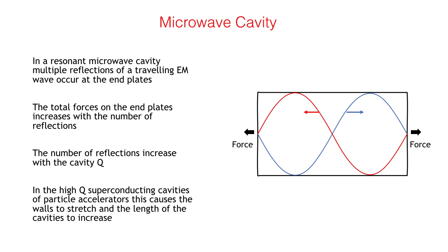M-Drive is essentially a microwave cavity where multiple reflections of a traveling electromagnetic wave occur at each end plate. These reflections cause forces at each end, and clearly the forces will increase with the number of reflections that take place. The electrical length of the cavity is an integer number of half wavelengths and is therefore a resonant system with a very large Q factor. Essentially, a very large number of reflections occur which increase as the Q factor increases.